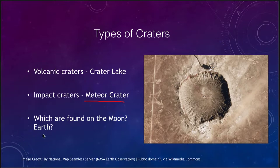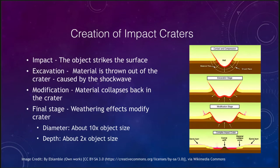Typically we can find impact craters on the moon. On the earth we find fewer impact craters and some volcanic craters, so we get a mixture of both on the earth. Now how does an impact crater form? There are a couple of different stages.